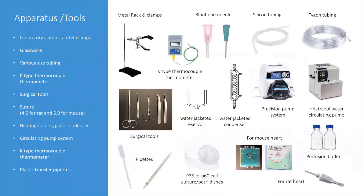Shown here are the essential equipment and tools you need to set up a Langendorff perfusion system for myocyte isolation. First, you need a stable stand and various clamps. You will need a water jacket condenser, temperature-controlled water circulator, circulating pump, silicone tubing, and blunt-end needles, which I will describe in more detail in later slides. These items can be easily found at companies such as Fisher Scientific or VWR.